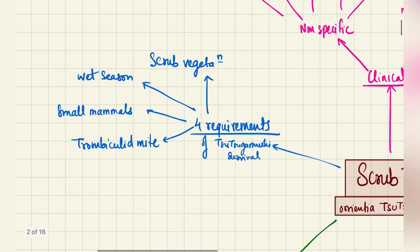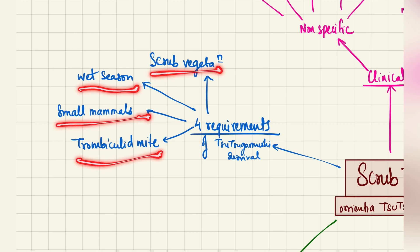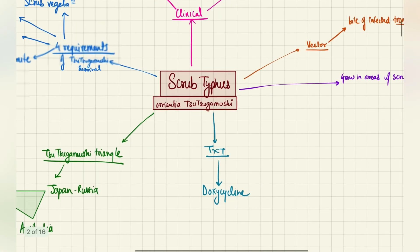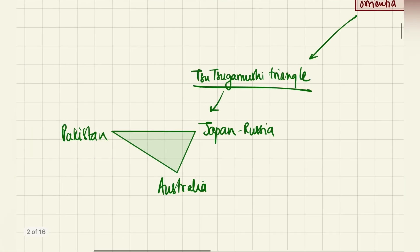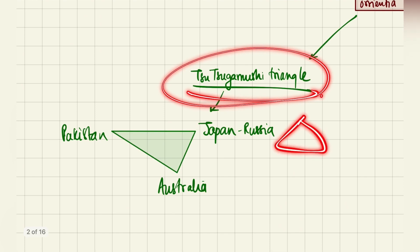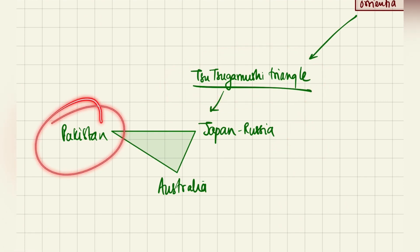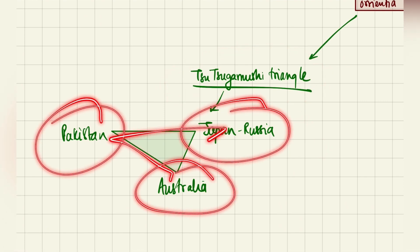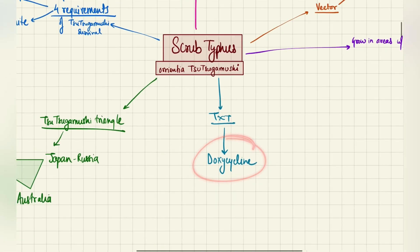Now the requirements for its survival are scrub vegetation, wet season, small mammals for its growth, and then trombiculid mite. Very basic as told previously. And if you want to know, there is a Tsutsugamushi triangle where it is predominantly found, which is Pakistan, Japan, Russia, and Australia. Between these it is most commonly found, and the treatment is doxycycline.